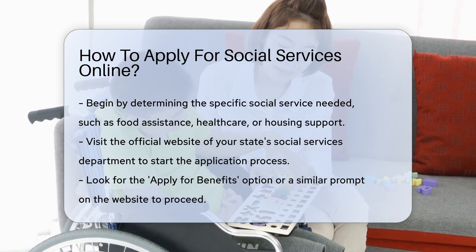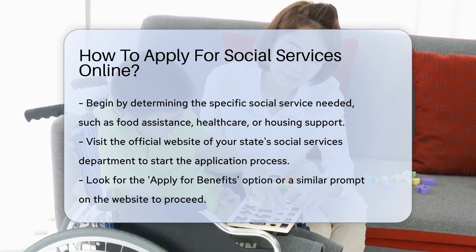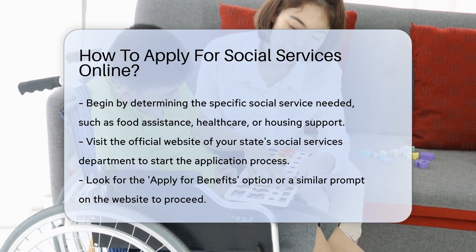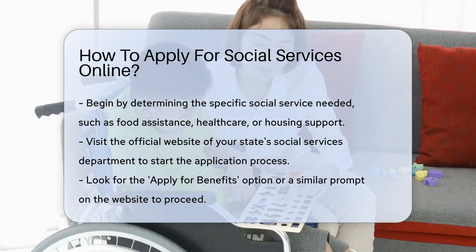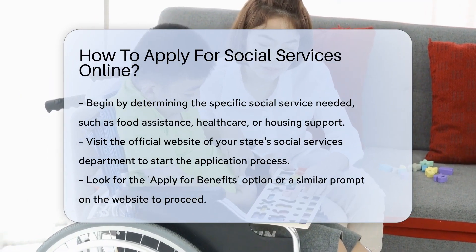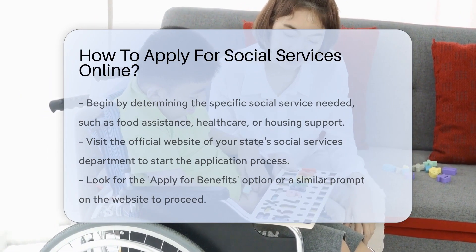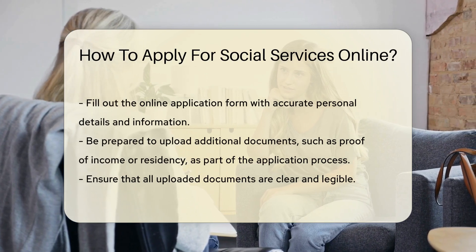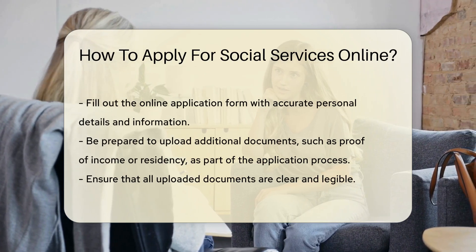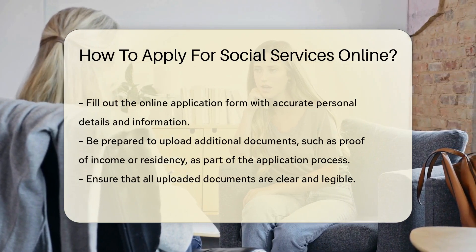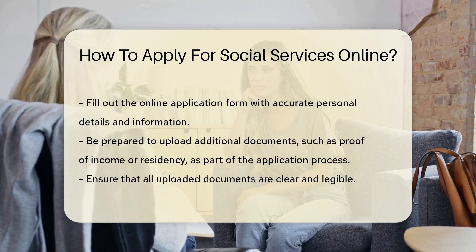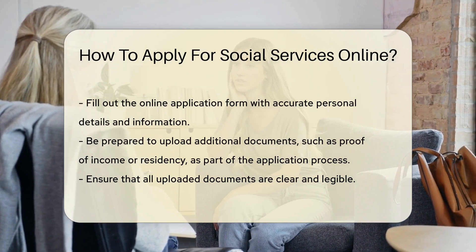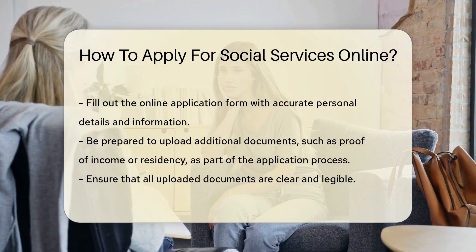Each sails under a different flag. Once you've spotted your treasure, navigate to the official website of the social services department in your state. These digital islands are where the magic happens. Look for the 'Apply for Benefits' compass or a similar prompt on the site. Clicking on this will usually lead you to an online application form.